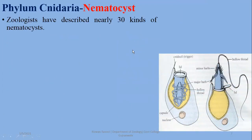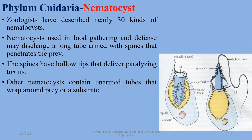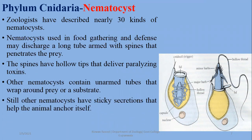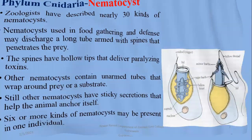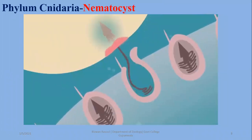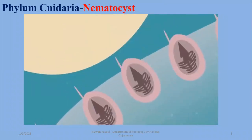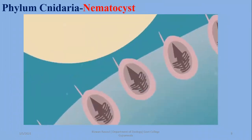Almost 30 kinds of nematocysts have been discovered, and in one individual you can observe multiple kinds of nematocysts. They are used in food gathering and defense. Some nematocysts have hollow tips that deliver paralyzing toxins. Other nematocysts contain unarmed tubes that wrap around the prey or substrate. Still other nematocysts have sticky secretions which help with attachment. Six or more types of nematocysts can be found in one individual. You can see in this image how the cnidocyte compresses to project the nematocyst and penetrate a body, causing stinging.